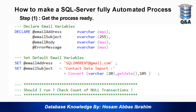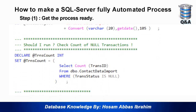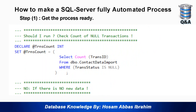We declare an error message variable for any error that might happen during the process. Then I set the email address where I will receive the notification, and set the email subject as 'Contact Data Import' plus the date — I have to convert the date to varchar because I am adding it to a text string. Now this stored procedure needs to decide whether to run or not.